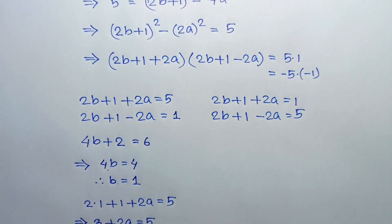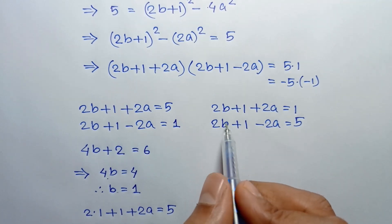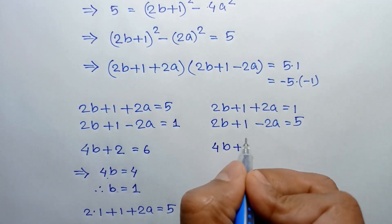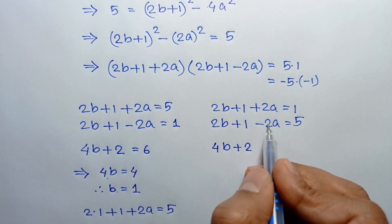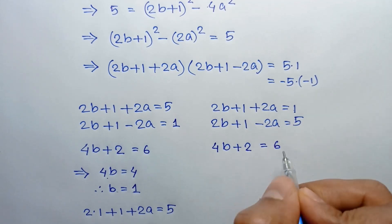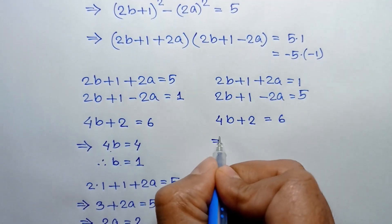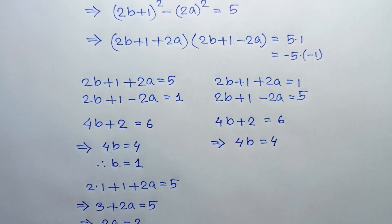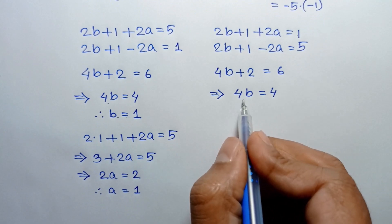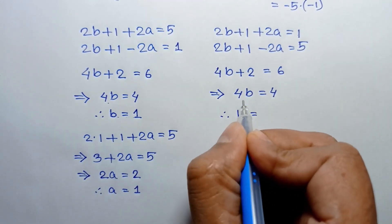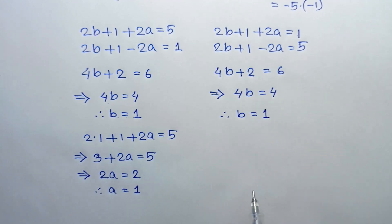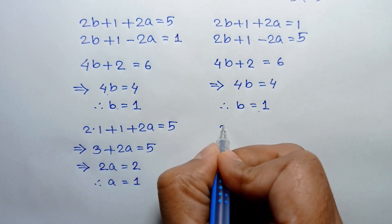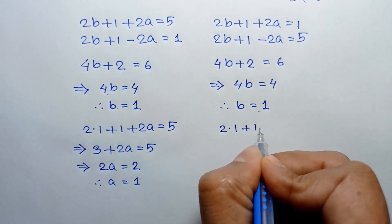For the sub-case where factors are 1 and 5: adding the two equations 4b + 2 = 6, the 2a terms cancel out. So 4b = 4, and dividing both sides by 4 we get b = 1.